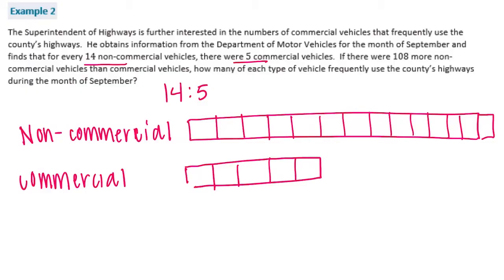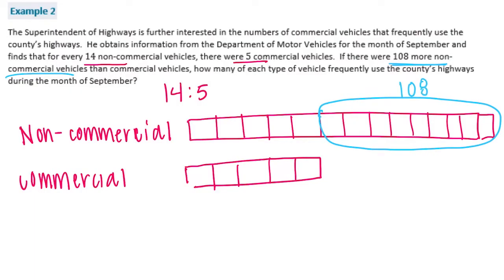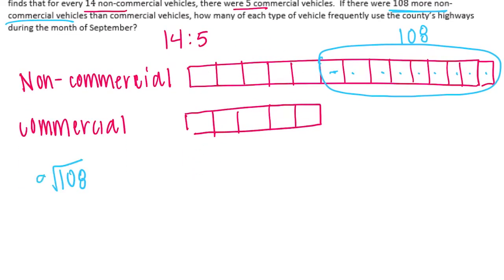There are 108 more non-commercial vehicles than commercial vehicles, so the extra portion — the difference — is equal to 108. Let's count how many extra parts that represents: 1, 2, 3, 4, 5, 6, 7, 8, 9. So let's split 108 into 9 equal pieces. 9 can't go into 1, but goes into 10 once; subtract 9, bring down the 8 to get 18; 9 goes into 18 twice with no remainder. So each piece is equal to 12, including all the other pieces.